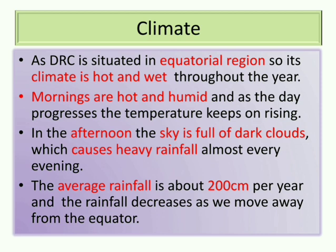Mornings are hot and humid, and as the day progresses the temperature keeps rising. By the afternoon, the sky is full of dark clouds, which causes heavy rainfall almost every evening. The average rainfall is about 200 cm per year, and rainfall decreases as we move away from the equator.